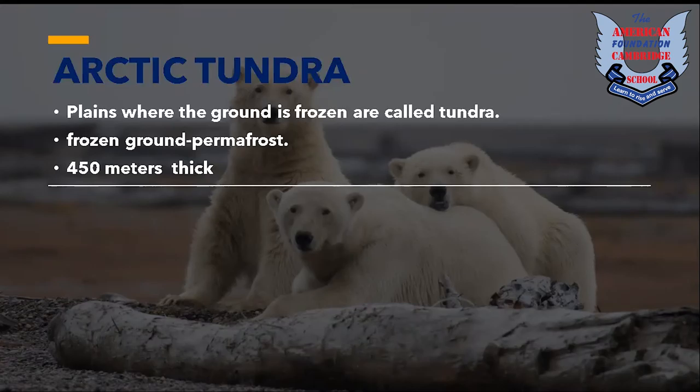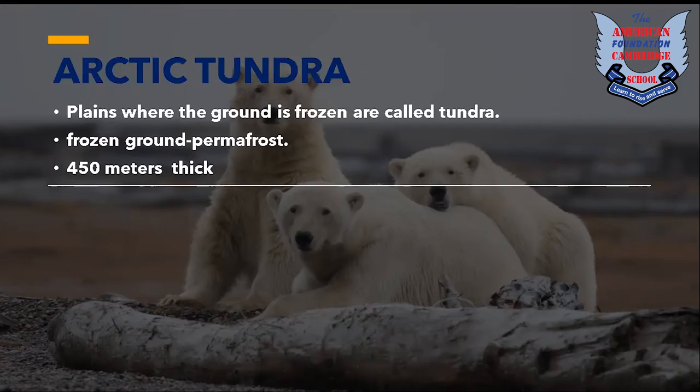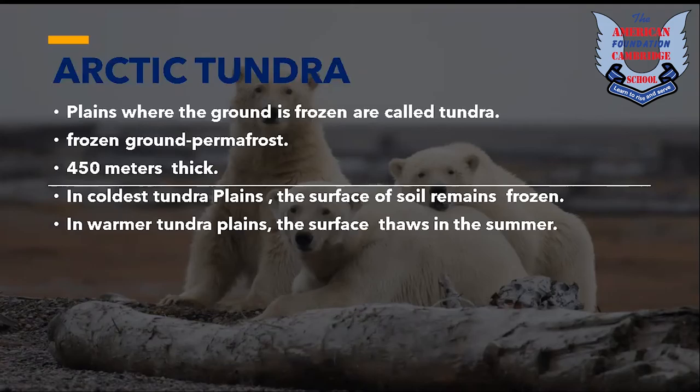Tundra plains receive very little rain, but water from melted ice forms bogs and shallow lakes in the summer. A bog is an area of wet muddy ground that is too soft to support a heavy body. Shallow lakes are defined as lakes where the euphotic zone extends to the bottom. Few trees grow on the tundra, but many small plants survive — for example, permafrost in an Arctic tundra plain in Alaska, USA, as seen in this picture.